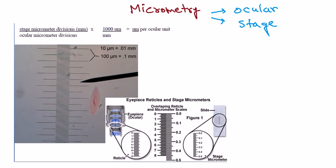What we need to do is use a standardized system to exclude all those unnecessary details and to fetch a formula which we can use across different types of microscopes to get the desired length. Because if you are viewing a particular organism at 10x magnification you see the length one way, at 100x you see it differently, and at 45x the calculation will vary. To reduce all these confusions, we use the micrometry technique.